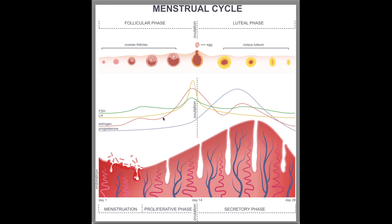Then mid-cycle, estrogen peaks, which leads to a surge in luteinizing hormone, or LH, which causes the release of an oocyte, or egg. Then during the luteal phase, the empty follicle that released the egg turns into something called a corpus luteum and produces progesterone. Progesterone thickens the lining of the uterus. And if pregnancy does not occur, progesterone levels drop and the corpus luteum is reabsorbed. Then we start the cycle all over again with the uterine lining being shed through menstruation.